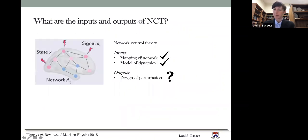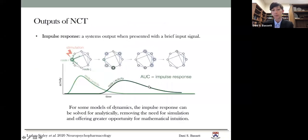So now that we've talked about the map of the network and the model of dynamics, I want to move on to the outputs. What is the output? How do we design perturbations? So there are several different outputs. Probably the simplest one is called the impulse response. So this is a system's output when presented with a very brief input signal. So you just ping the system and see what happens. So here's a bit of stimulation to a node that changes the activity of node I, but it also changes the activity of node J, which is connected to it. And if you sum up over all of these different responses from all of the different nodes, that provides you with the impulse response of the system.